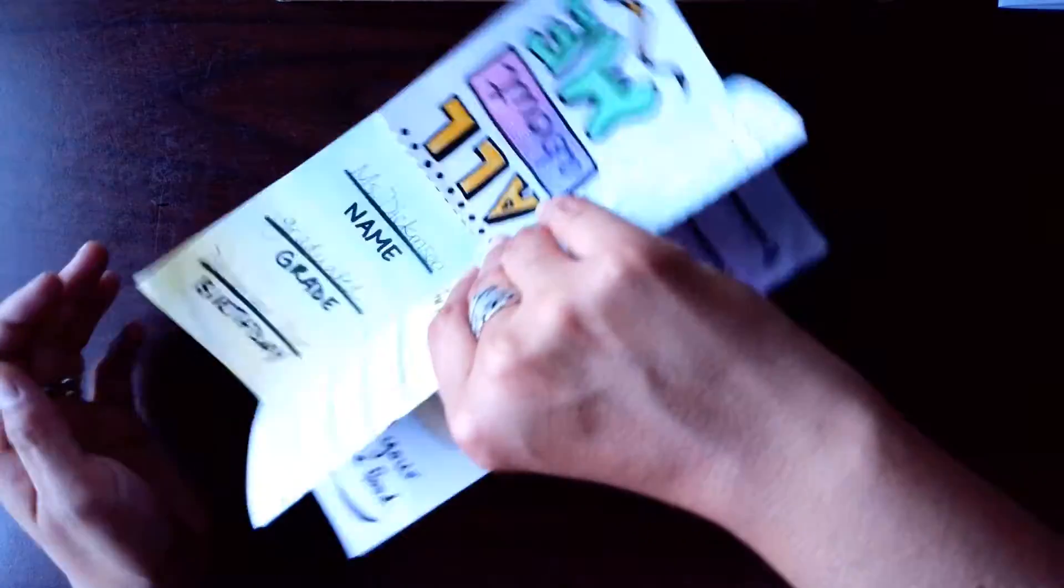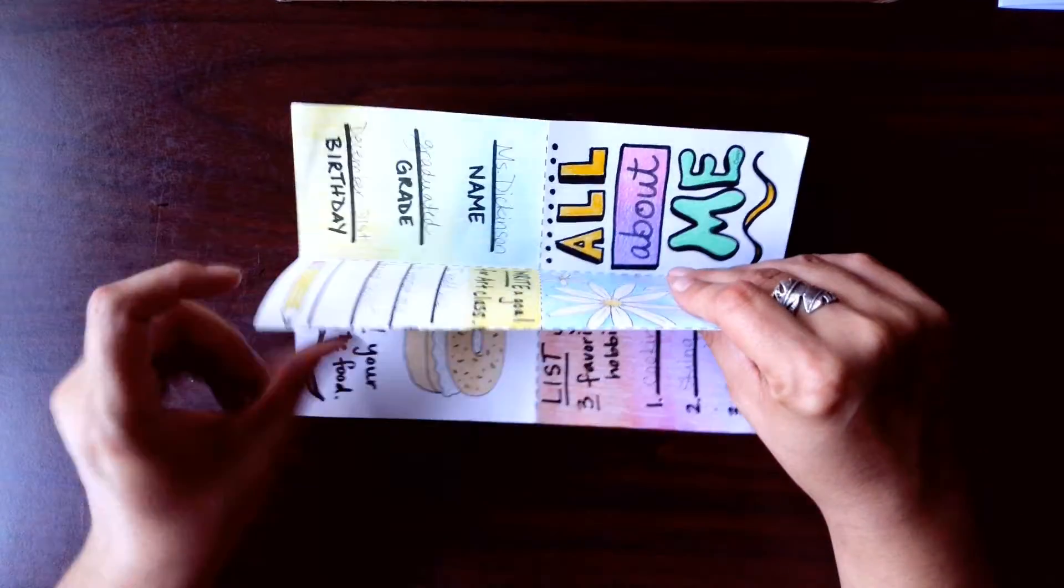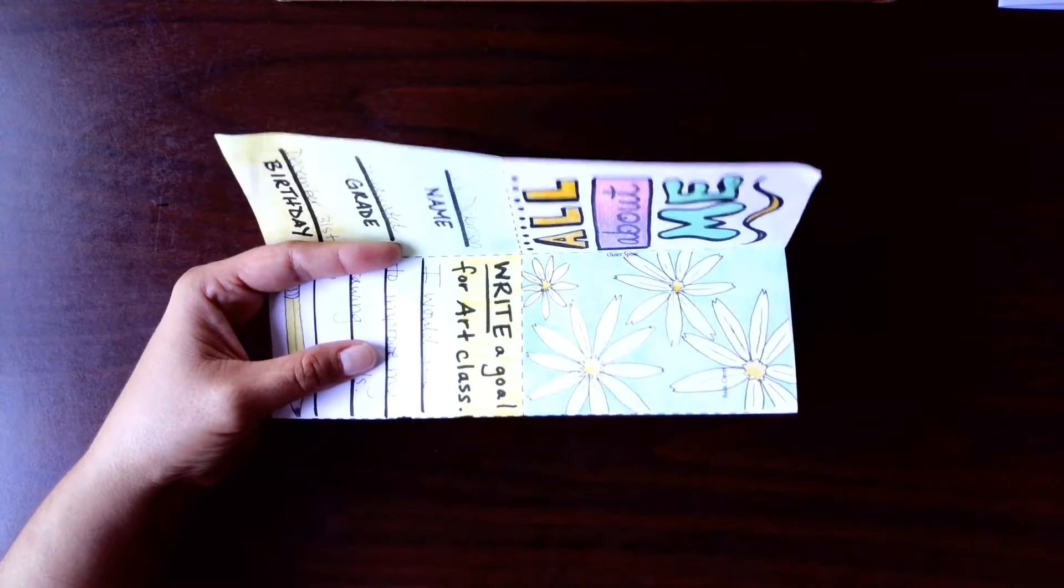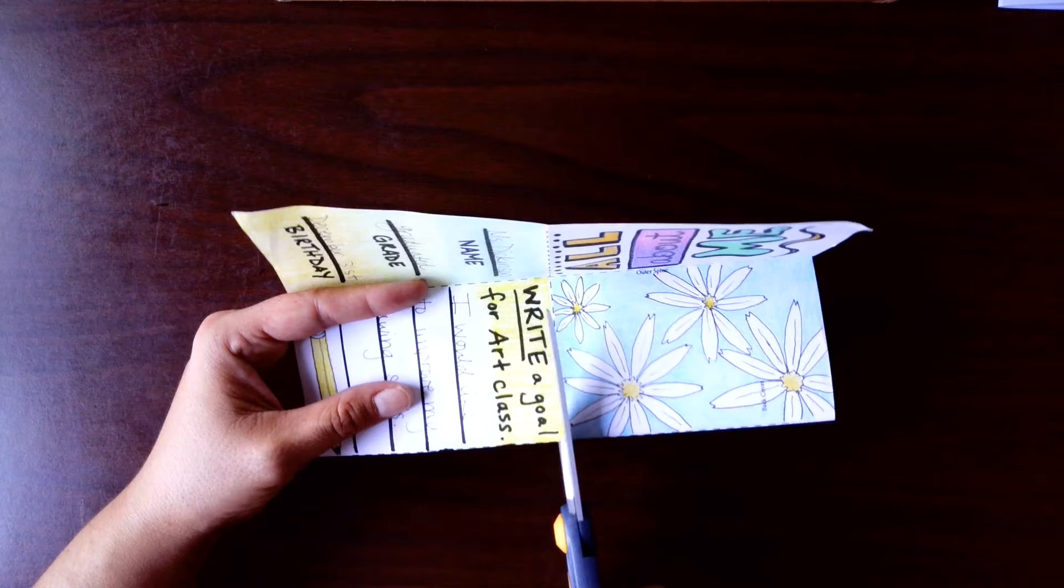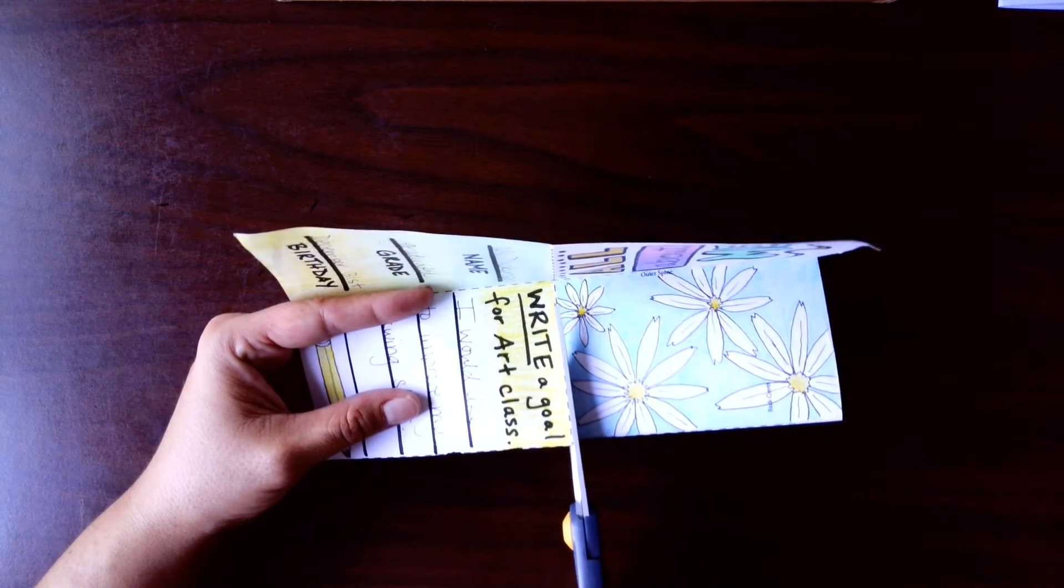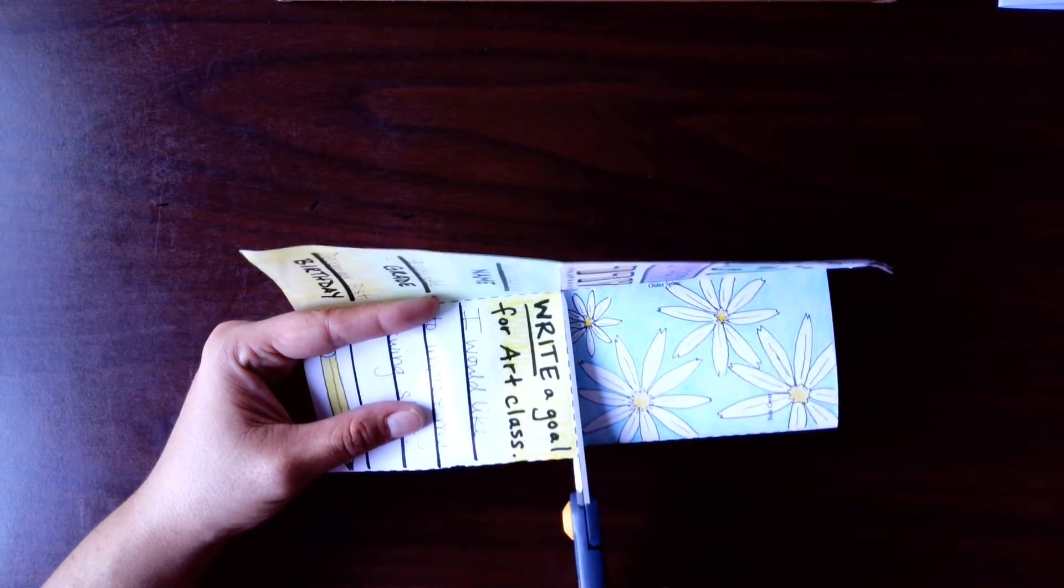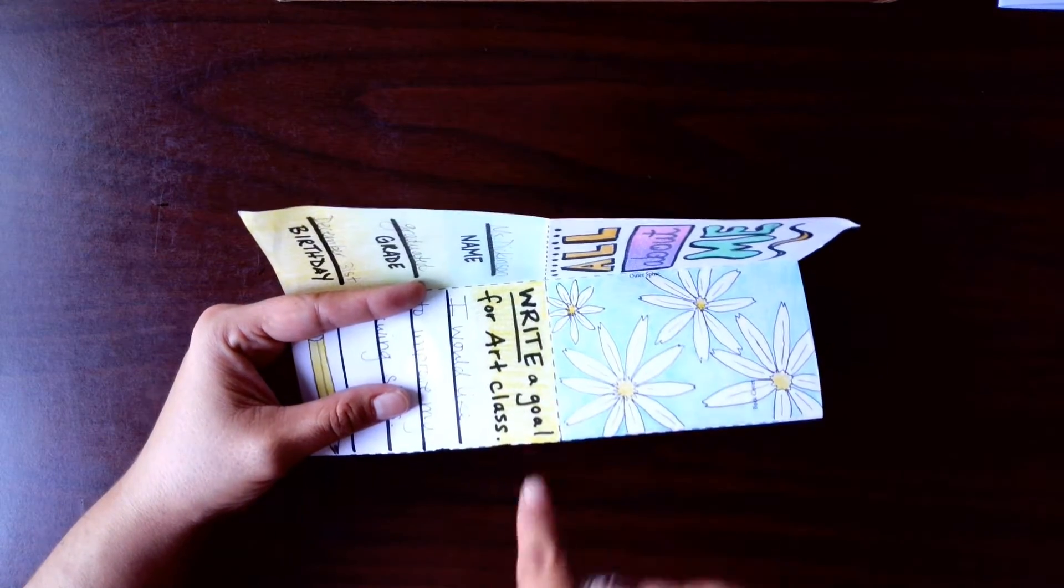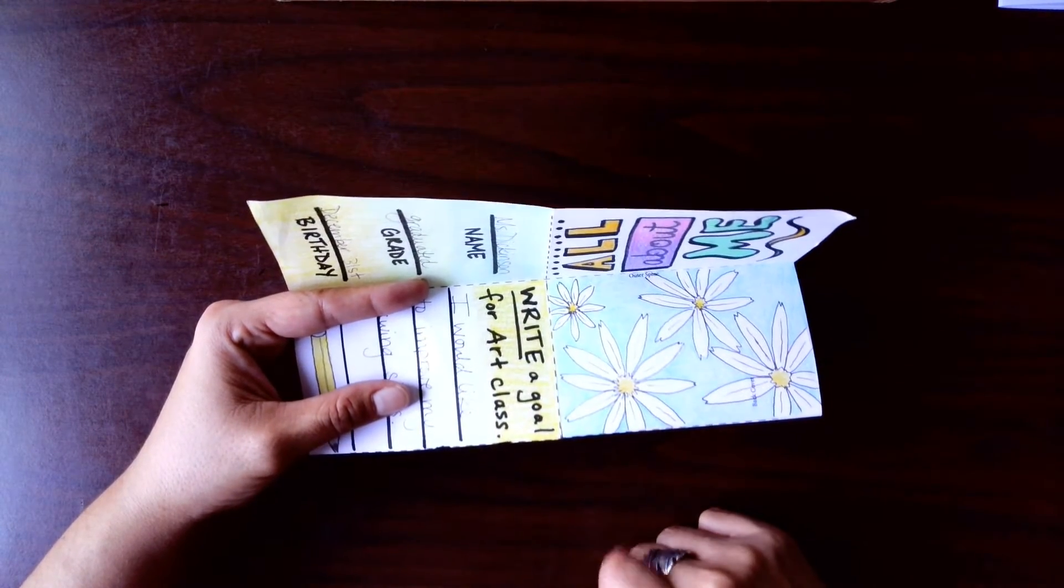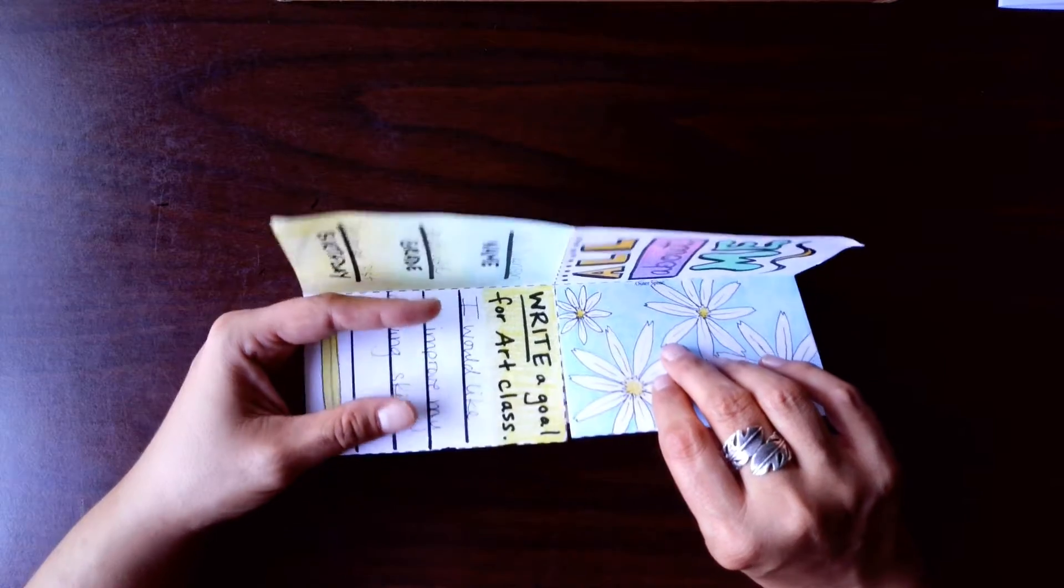The last step is we're going to take it from the middle right here. I'm just going to grab this middle section and take a pair of scissors. We're going to cut just along this dotted line for just the length of that little section. You don't want to cut all the way through or you'll cut your zine in half and it won't make a book.